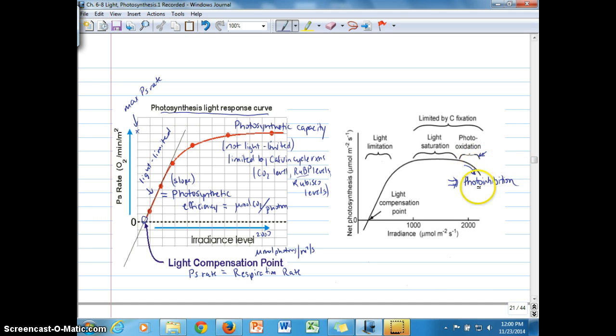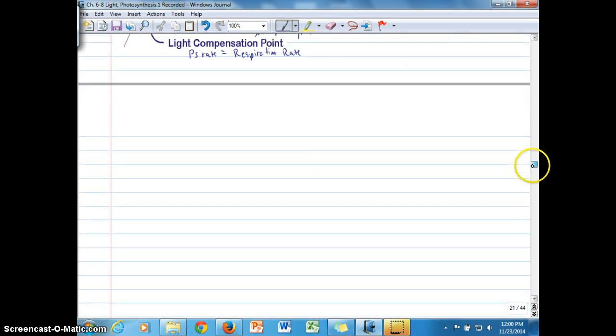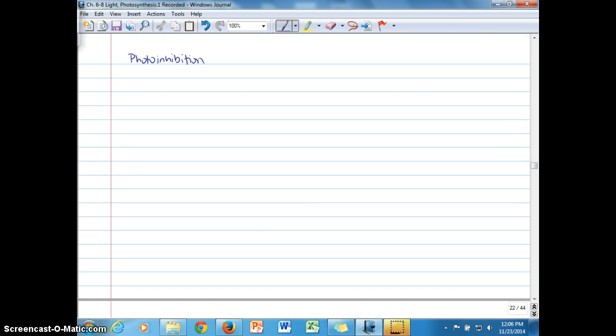Some of the light electron transport machinery, light reaction machinery, becomes damaged. Photo-inhibition is basically defined as oxidative damage to lipids, proteins, pigments, perhaps the oxygen-evolving complex, the D1 protein, due to excess absorption of light energy. In the next video clip, we'll look at ways the plant can respond to minimize and repair damage resulting from photo-inhibition.